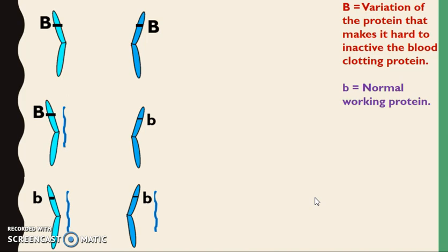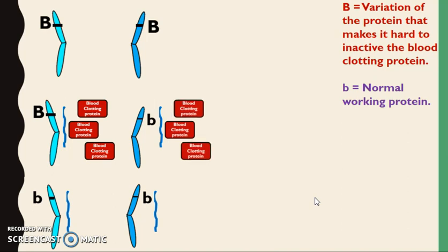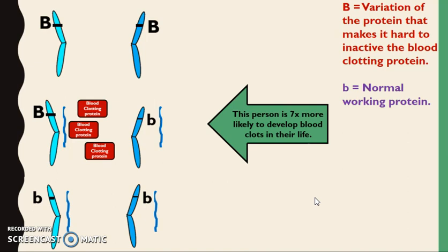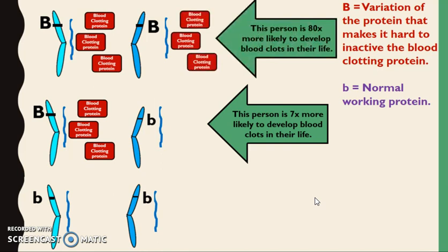However, on one of my chromosomes I inherited a mutation where the protein folds up differently, probably due to a missense mutation, and that blood clotting protein stays active for longer. While I'm heterozygous, my second chromosome produces the normal functioning version. Because one version of my gene makes the protein that clots blood and it stays longer in the body, I am seven times more likely to develop blood clots in my life. If I was homozygous dominant for this trait, I would be 80 times more likely to develop blood clots.